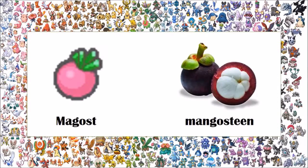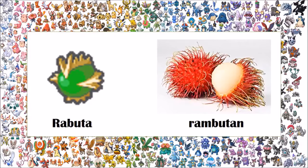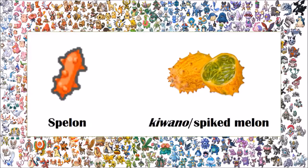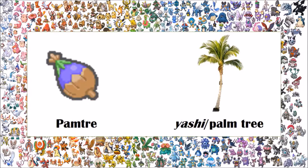The Magost berry is based on the mangosteen, and uniquely it is also something that a Gen 7 Pokemon and its evolutions were based on. The Rabuta berry is based on the rambutan. The Nomel berry is based on the lemon. The Spelon berry is based on the kiwano in Japan, which is also commonly known as the spiked melon. The Pamtre berry is probably one of the more unique berries because it's not based on a real-life fruit. I checked and double-checked and triple-checked, and I cannot find an actual fruit that this Pamtre berry is based on.